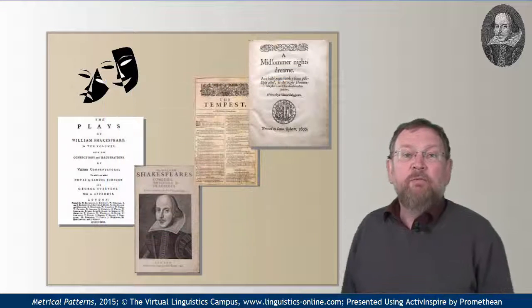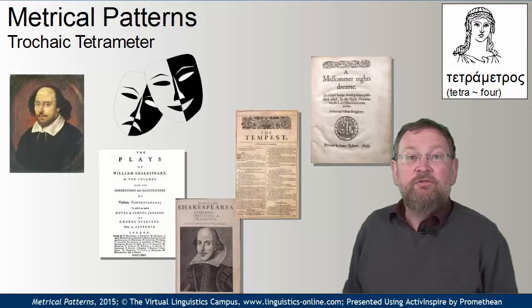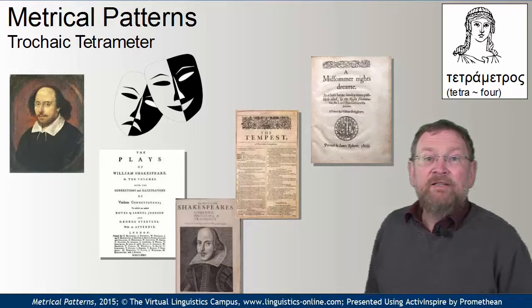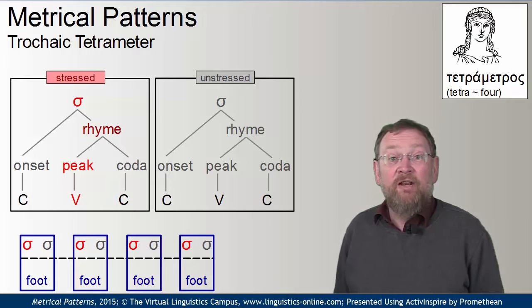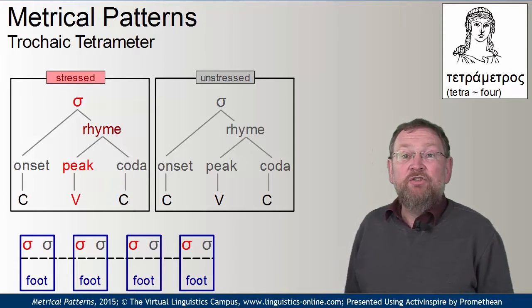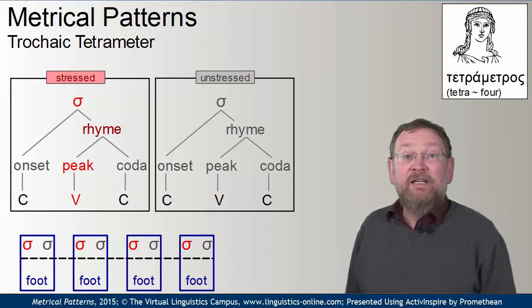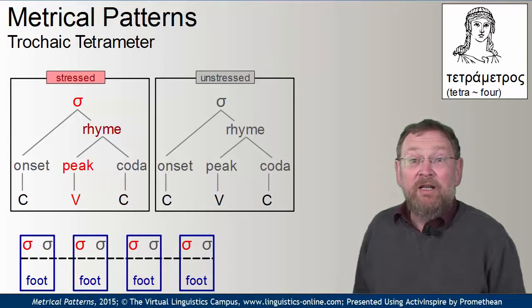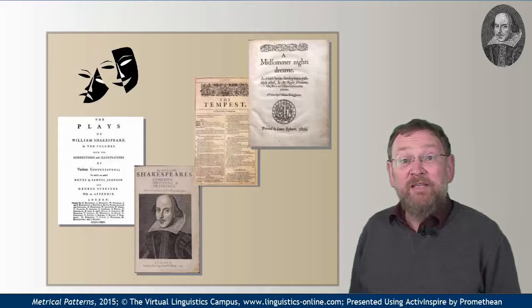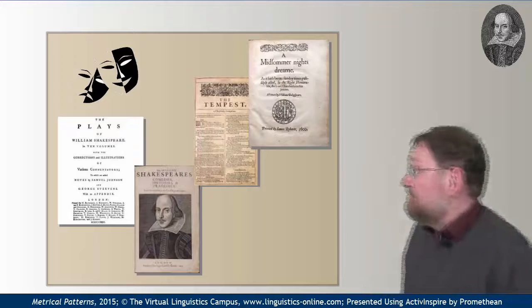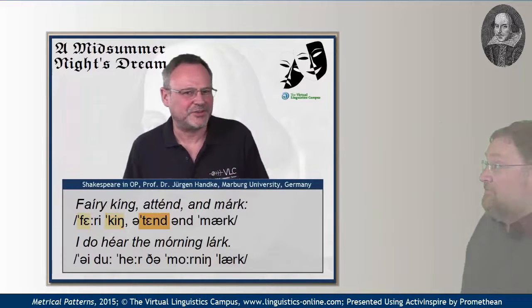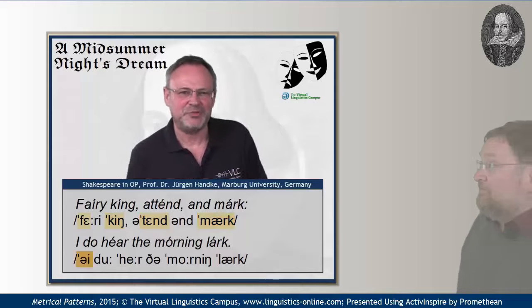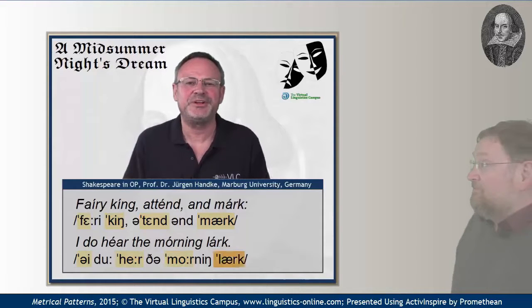Another very common meter used in Shakespeare is the trochaic tetrameter. It is a series of four feet that contain a stressed syllable before an unstressed one. So a line should ideally be eight syllables in total and end in an unstressed syllable. Listen to this example from A Midsummer Night's Dream where Puck says: 'Fairy king, attendant mark, I do hear the morning lark.'